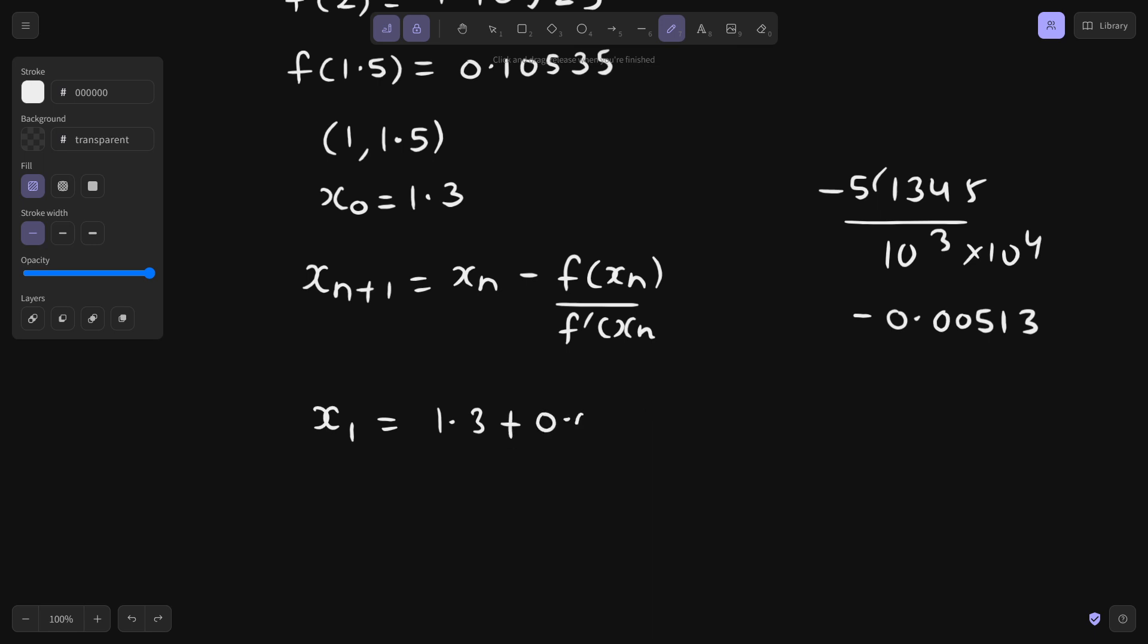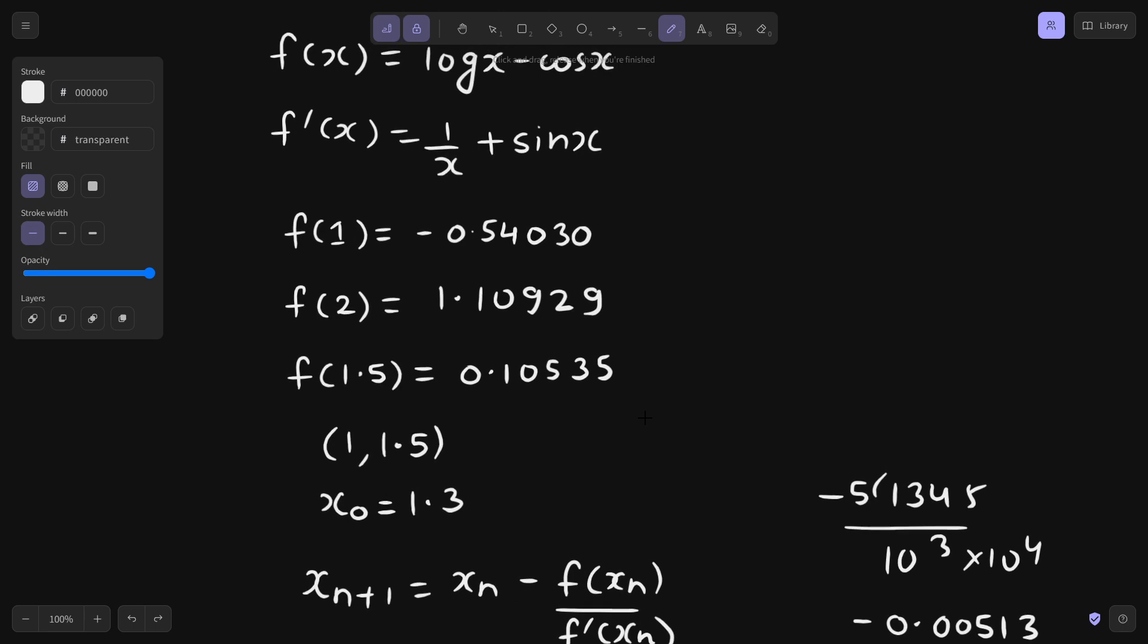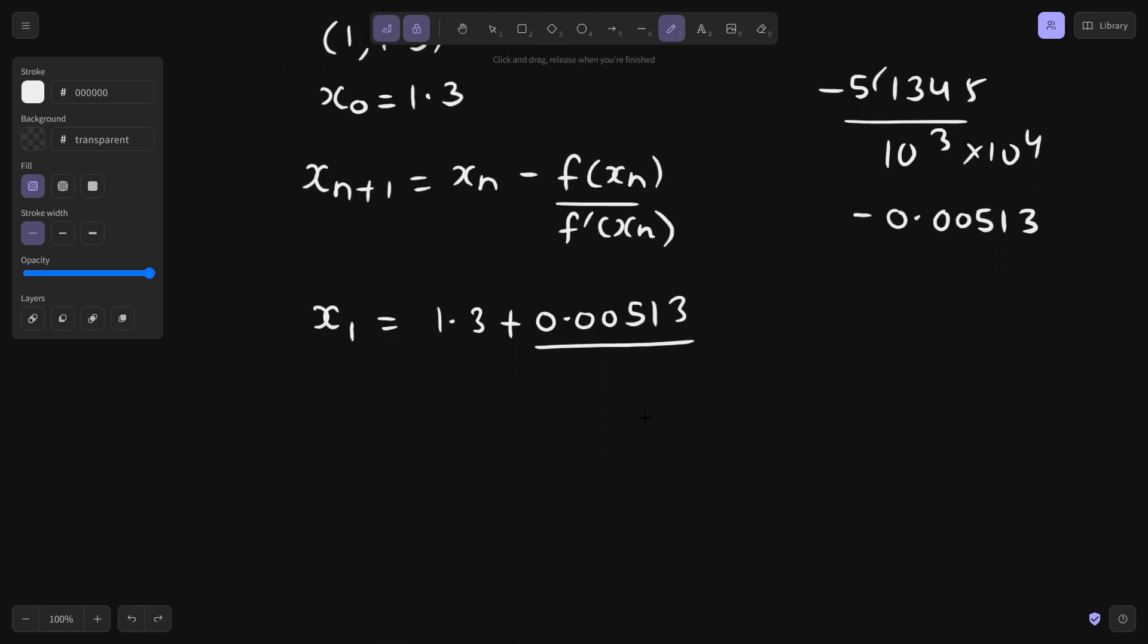So positive 0.00513 divided by derivative which is 1 by x plus sin x. That will be 1 divided by 1.3 plus sin of 1.3. That is coming out to be 1.73278. So finally calculating it, 1.3 plus 0.00513 divided by 1.73278. This is 1.30296, I'm taking it to 5 decimal places.